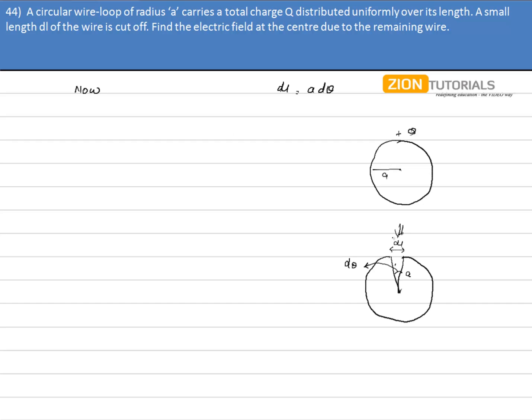As you can see in the picture that the electric field due to this part and due to this part will be equal to zero. Because, the net electric field due to this part, that is the part AB and part CD is equal and opposite. So, the electric field due to AB is equal to electric field due to CD.